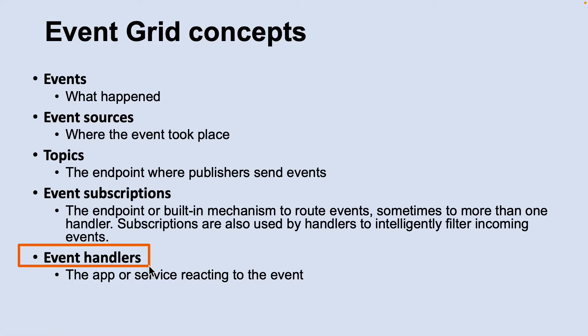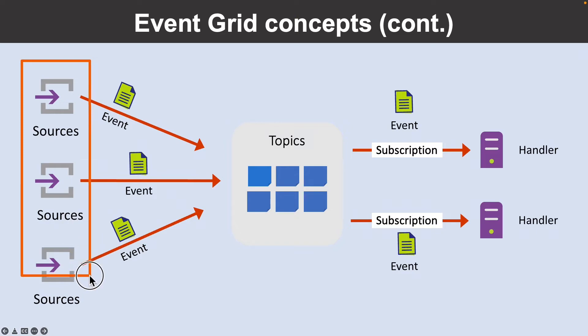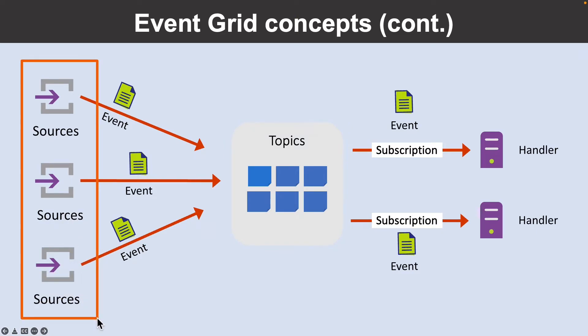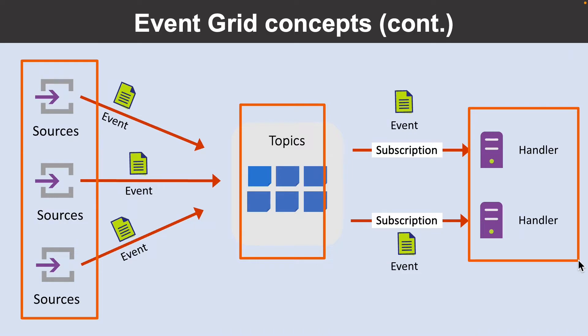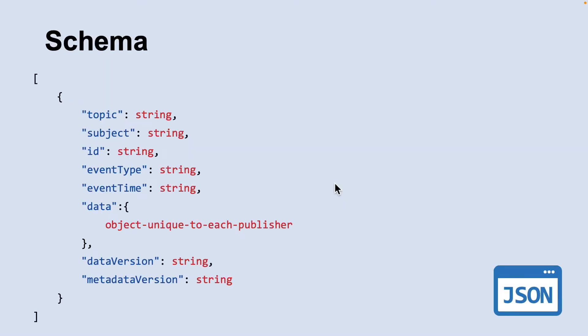The next concept is event handlers. From an Event Grid perspective, an event handler is the place where the event is sent. The handler takes some further action to process the event. Event Grid supports several handler types — you can use a supported Azure service or your own webhook as the handler. The event source is where the event happens, and the Event Grid topic provides the endpoint where the source sends events. The handler then takes further action to process the event. Let's look at a schema.